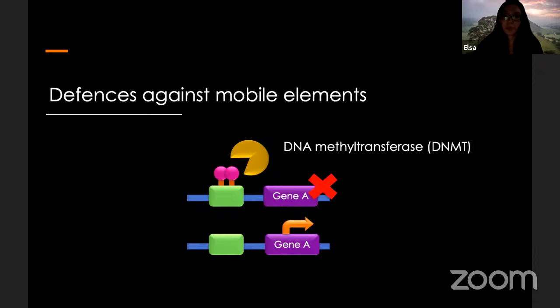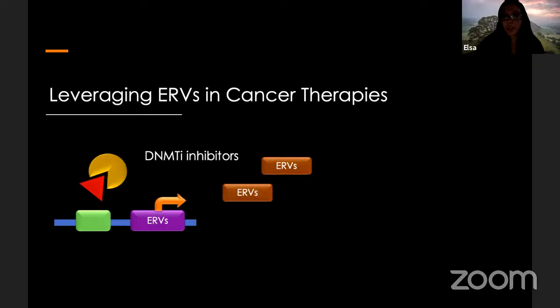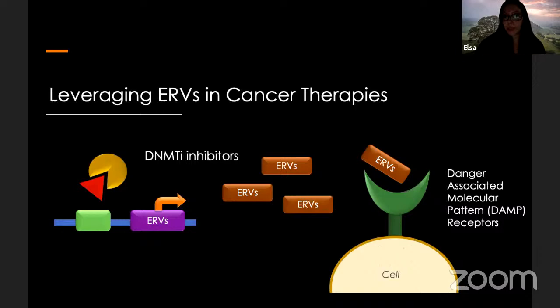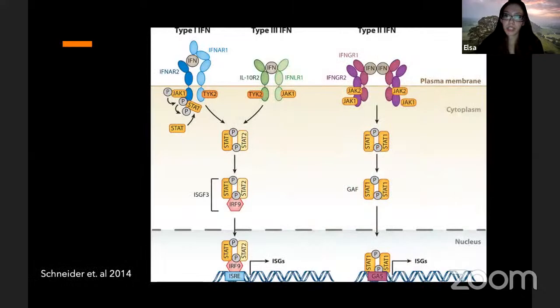When DNMT is no longer able to add methyl groups to DNA, ERVs are transcribed. These ERVs are detected by special receptors in our immune system known as danger-associated molecular patterns, or DAMPs, which upon ligand binding trigger an intracellular cascade, resulting in the transcription and expression of antiviral proteins called interferons. There are broadly speaking three classes of interferons, which can be expressed by different cells. In a similar manner to DAMPs, these proteins bind to their cognate receptor and trigger another cellular cascade, resulting in more antiviral proteins being produced — called interferon-stimulated genes, or ISGs.